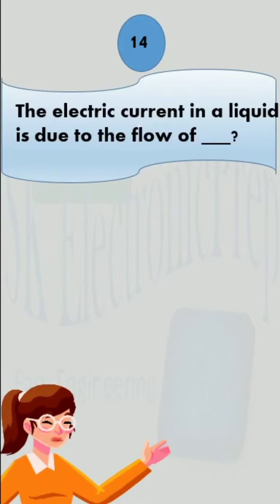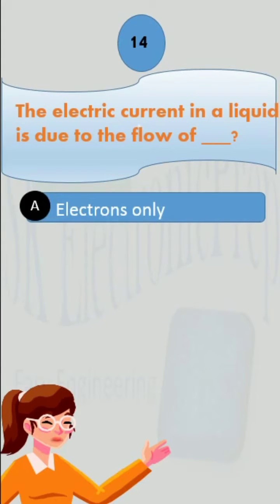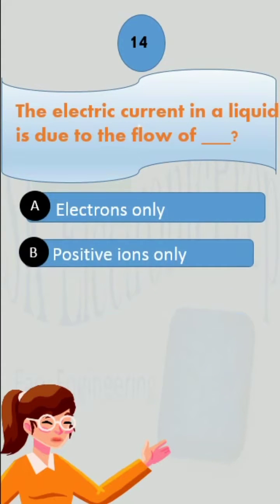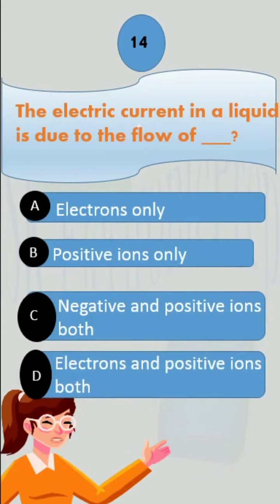The electric current in a liquid is due to the flow of: Option A, electrons only; Option B, positive ions only; Option C, positive and negative ions both; Option D, electrons and positive ions both.